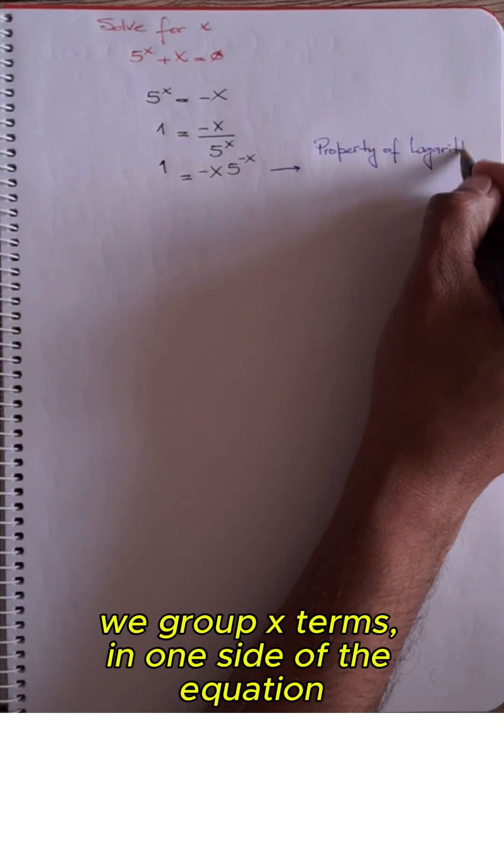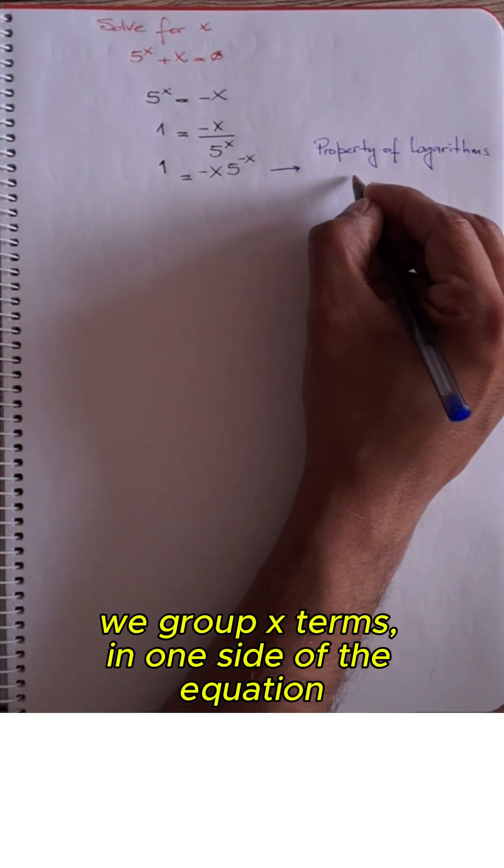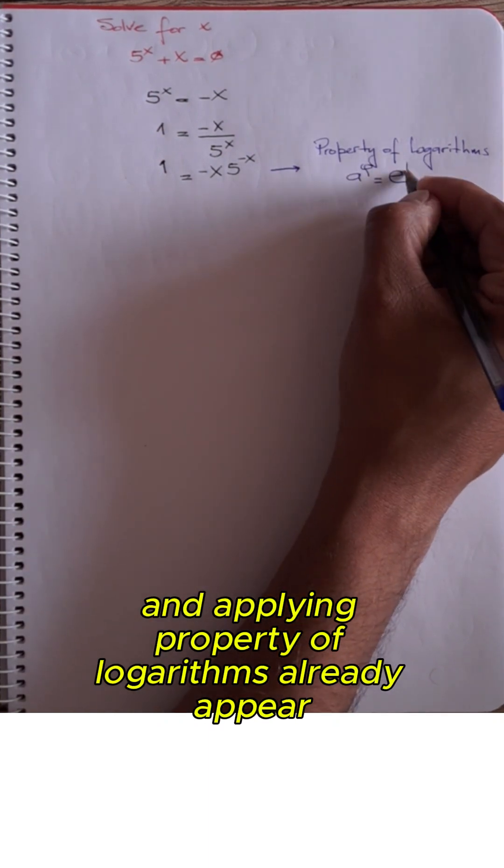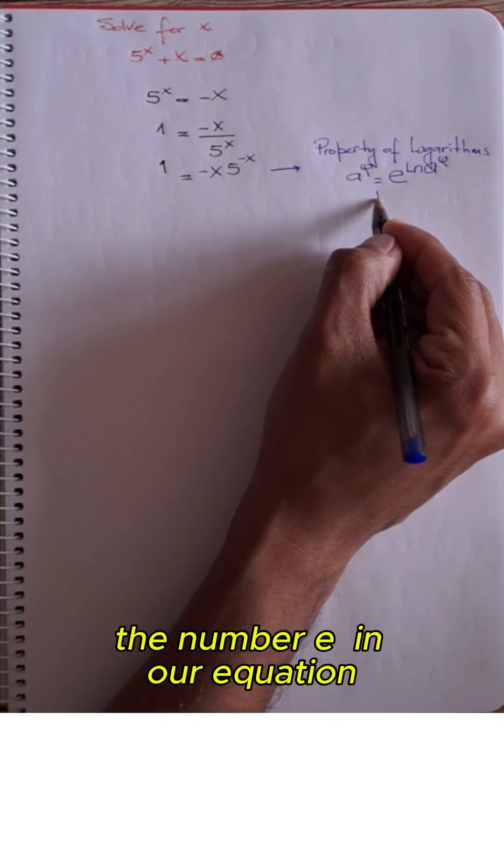Combining like terms, we group x terms on one side of the equation. Applying properties of logarithms, the number e appears in our equation.